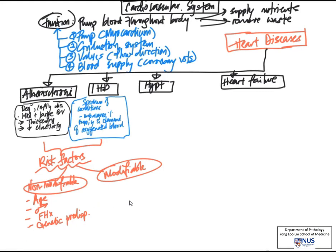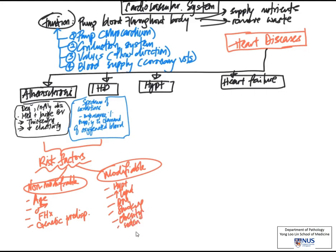When it comes to modifiable risk factors, there are quite a number. Hypertension is one of them — which predisposes vessels to lipid accumulation and atheroma formation. Others include hyperlipidemia, diabetes mellitus — all of which can be controlled to a certain extent with medication — and lifestyle factors such as smoking, obesity, and sedentary lifestyle.